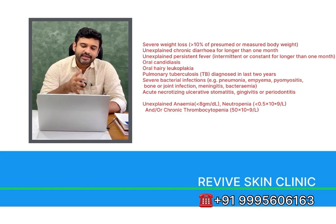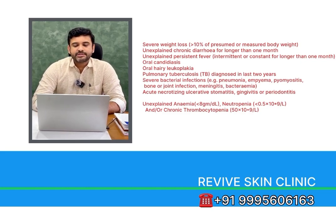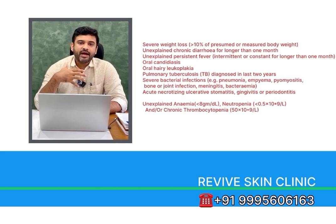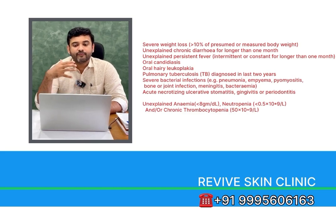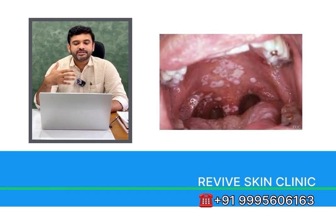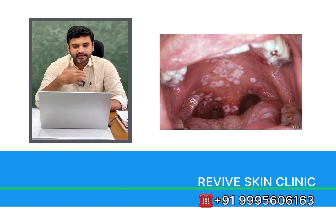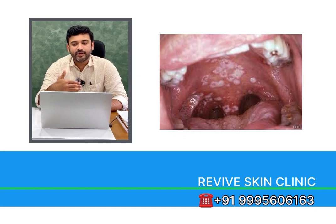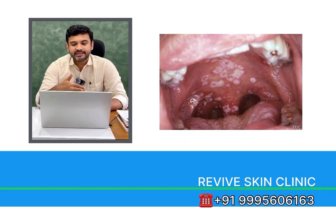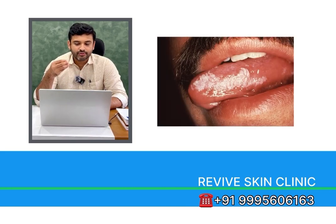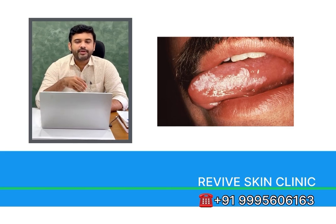When the patient goes to clinical stage 3, there will be severe weight loss, which is more than 10% of the presumed or measured body weight. Then there will be unexplained chronic diarrhea for longer than one month, and unexplained persistent fever, which can be intermittent or constant, for more than one month. Other symptoms include oral candidiasis, oral hairy leukoplakia, pulmonary tuberculosis, and severe bacterial infections in the form of pneumonia, empyema, pyomyositis, bone or joint infection, meningitis, and bacteremia. There will also be unexplained severe anemia, severe loss in neutrophil count, and a severe drop in platelet count.